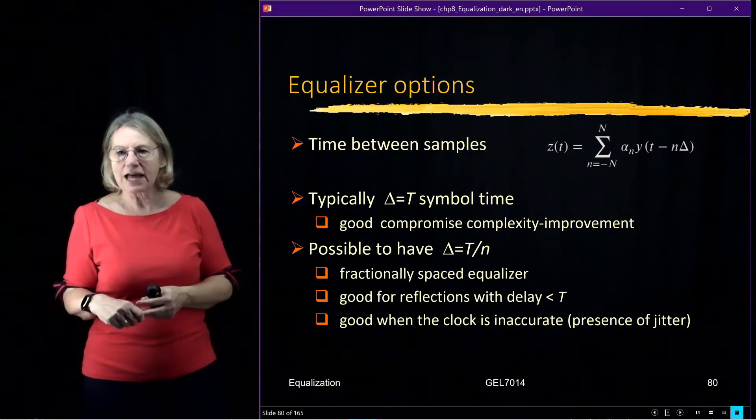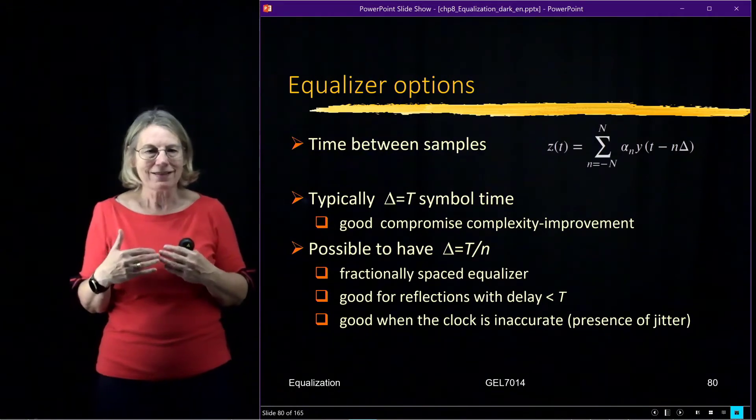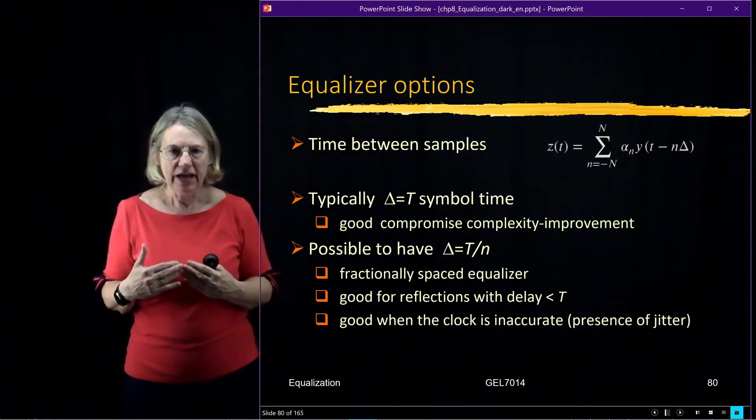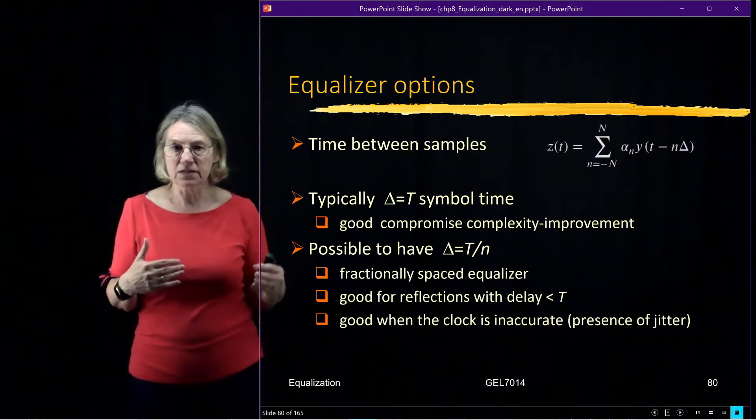If the delay in the channel is smaller than one symbol interval, then I'm really going to need to use a fractionally spaced equalizer in order to really capture what's going on in the channel.